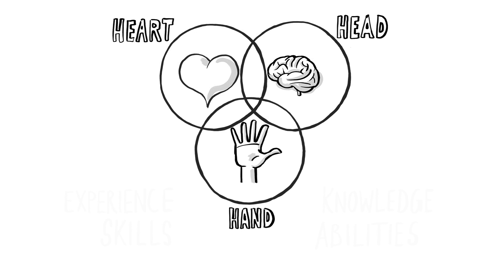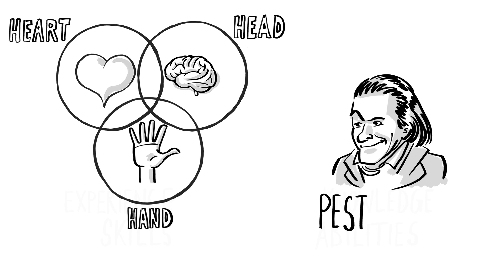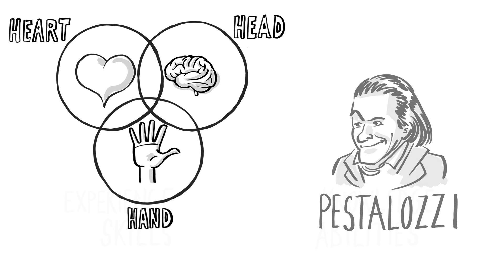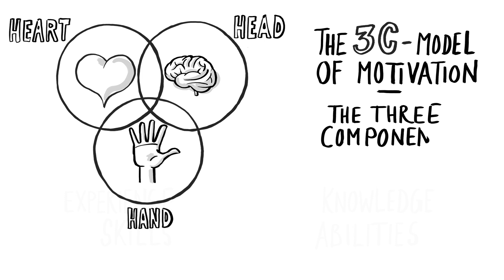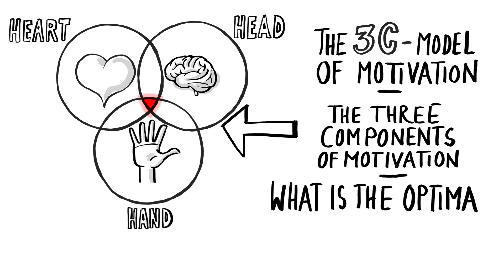Head, heart and hand. This is actually quite an old triad. It goes back to Johann Heinrich Pestalozzi, a famous Swiss educator from the early 19th century. But of course the comprehensive model is new. I call it the 3C model of motivation. The three components of motivation. The 3C model suggests that ideally all three components should be fulfilled. What can we expect if this is the case? What is the optimal motivation?